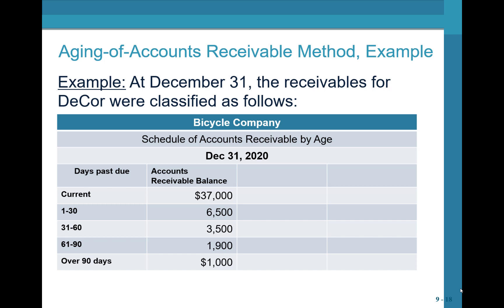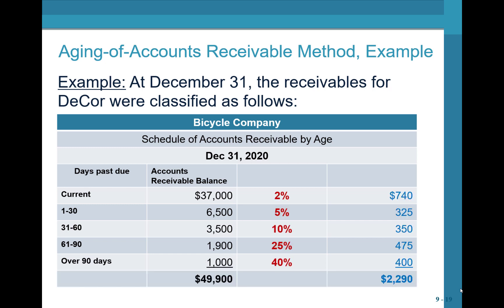Bicycle Company has the following schedule of accounts receivable by age: $37,000 current; $6,500 as 1 to 30 days old; $3,500 between 31 and 60 days; $1,900 between 61 and 90 days; and $1,000 over 90 days old. We assign a larger percentage to older accounts because they are less likely to be collected. We multiply each balance by its percentage to find the uncollectible amount, then add it all up.